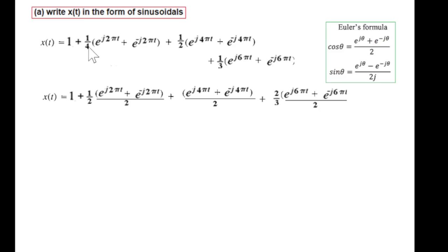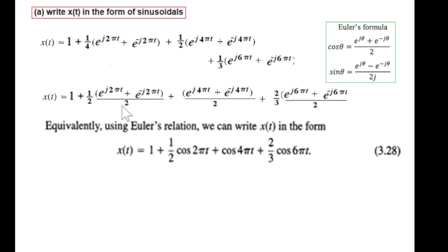Dividing by 2 and balancing, 1 over 4 will become 1 over 2 here, 1 over 3 becomes 3 over 2. Now we can use the formula: it is 1 plus half cosine 2πt, then magnitude 1 cosine 4πt, and 2 over 3 cosine 6πt. This is our answer of the first part.